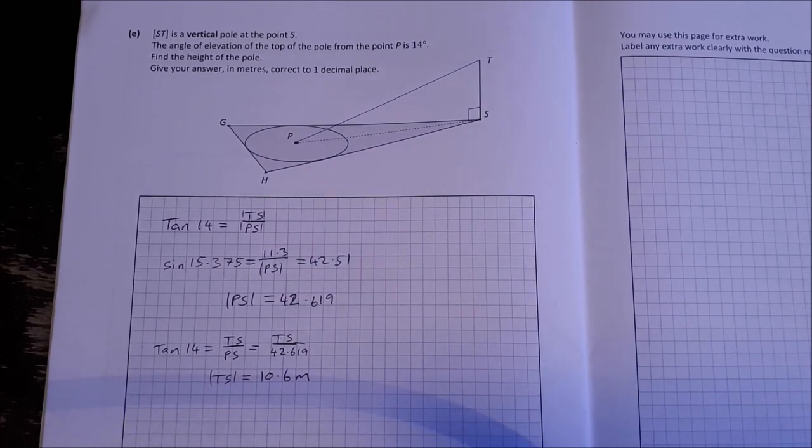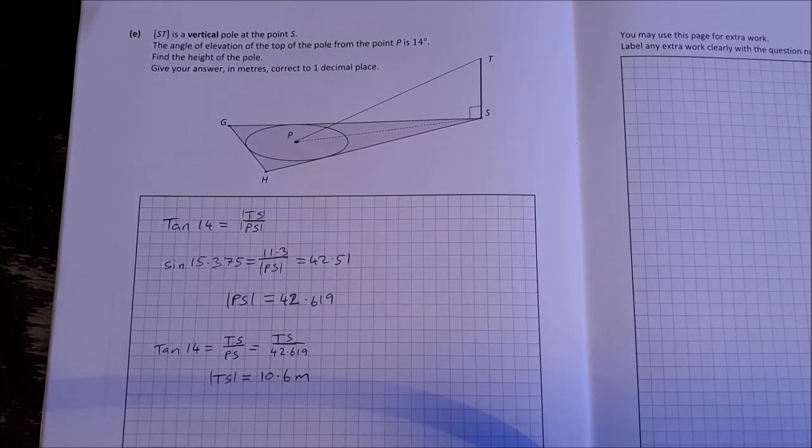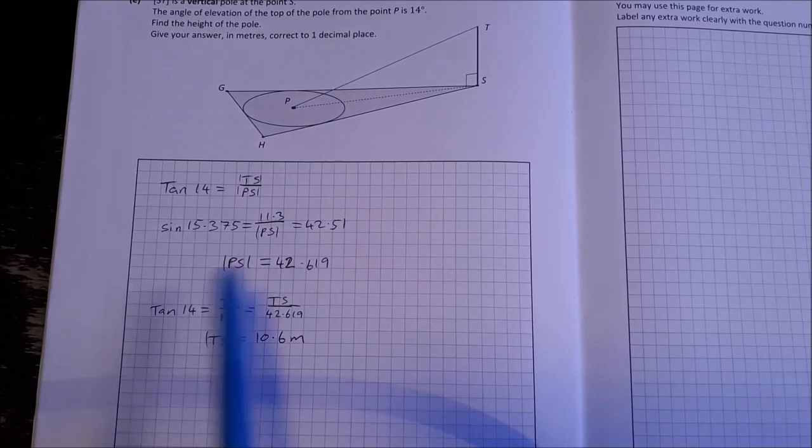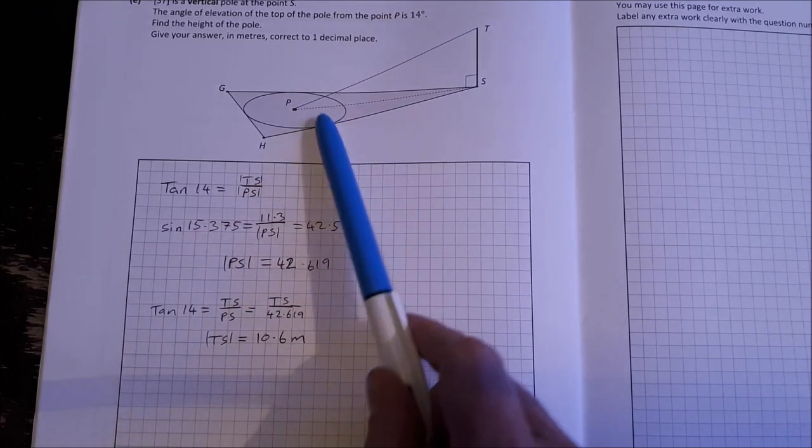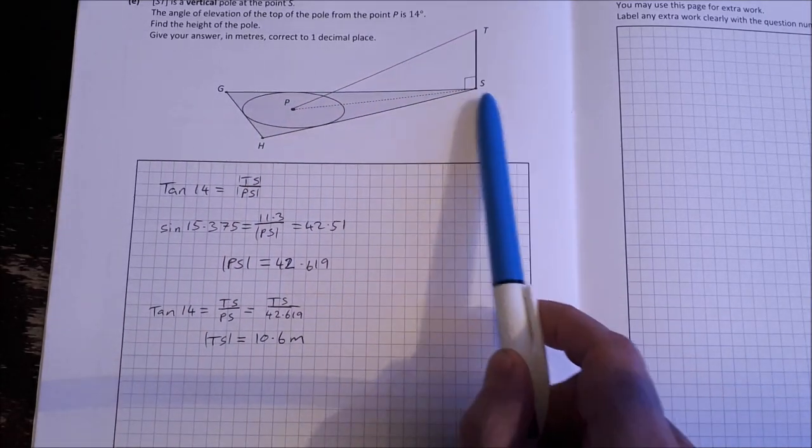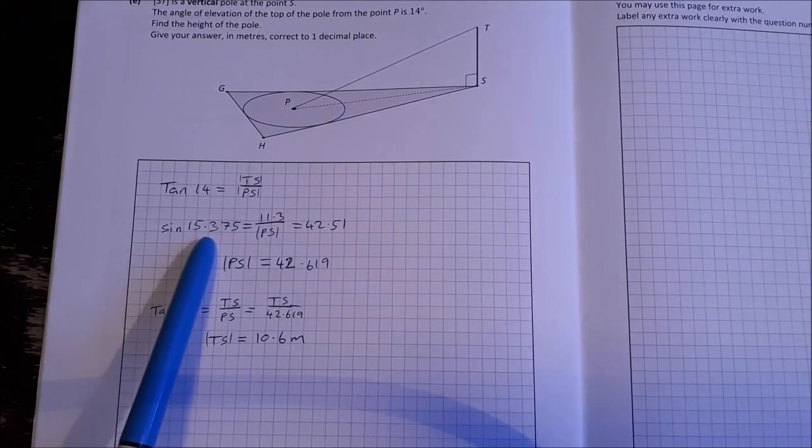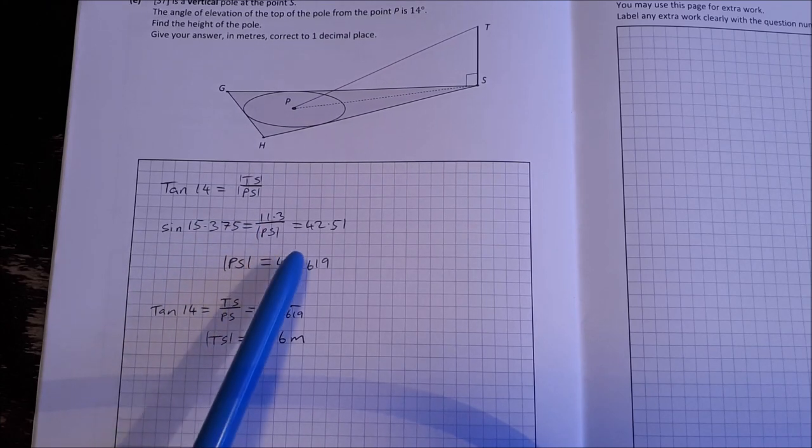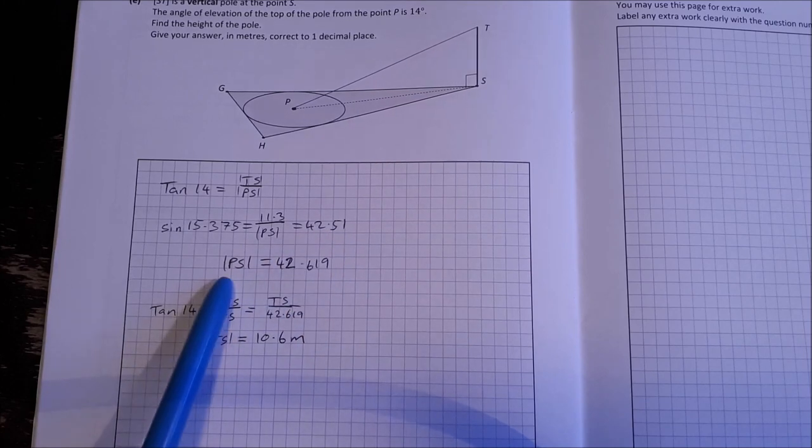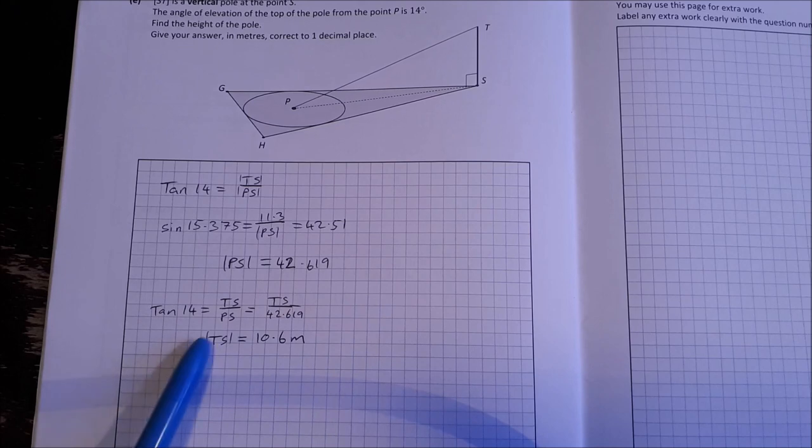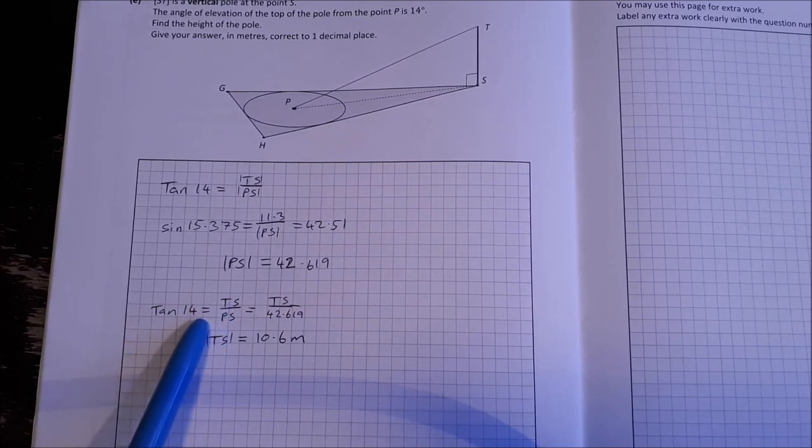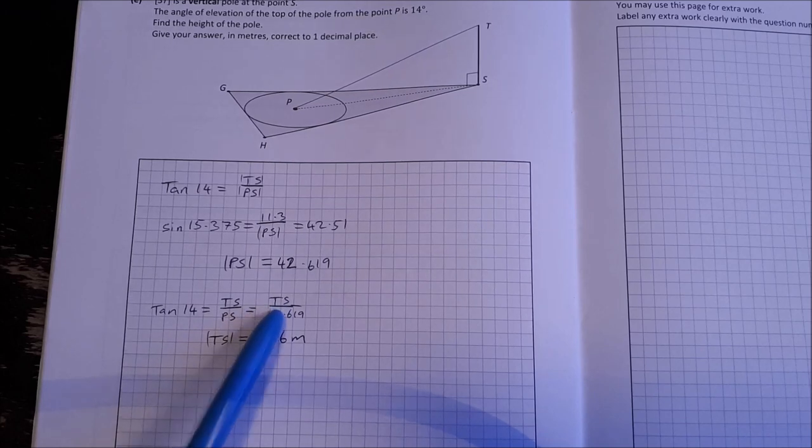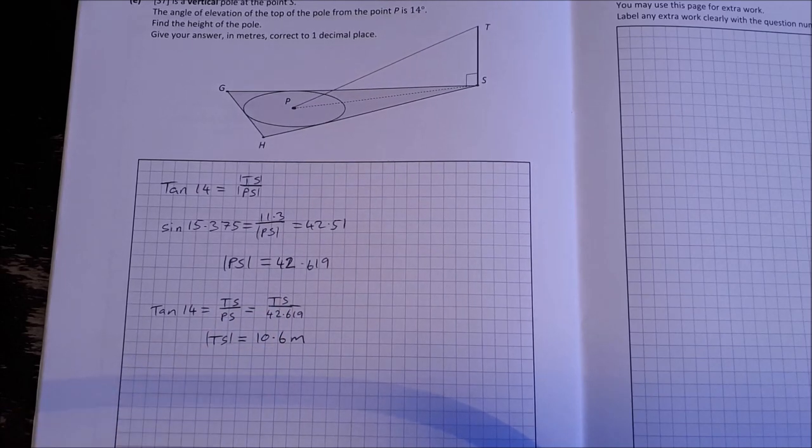And then the last part, ST is a vertical pole at the point S. The angle of elevation of the top of the pole from the point P is 14 degrees. Find the height of the pole, give your answer in meters, correct to one decimal place. So tan of 14 is TS over PS. The sine of 15.375 is equal to 11.3 over PS, which is 42.51. That means PS is 42.619. So now we can sub in tan 14 is TS over PS. We've just found PS, isolate TS, and solve to get 10.6 meters.